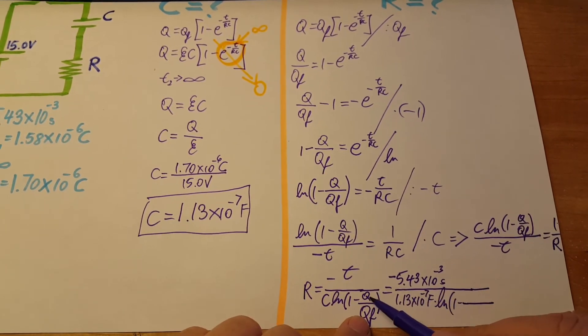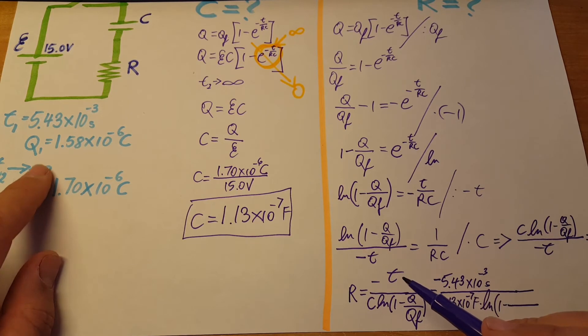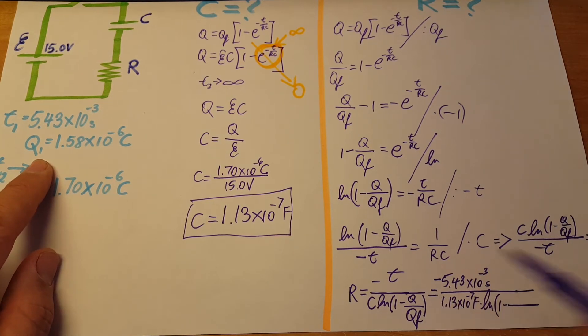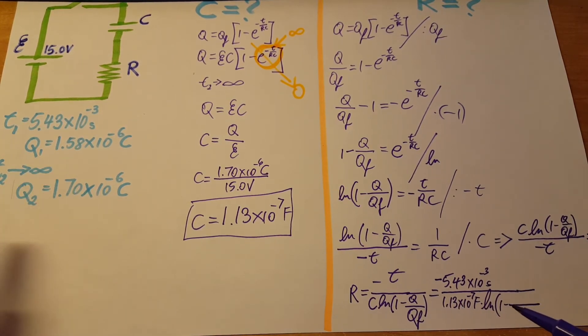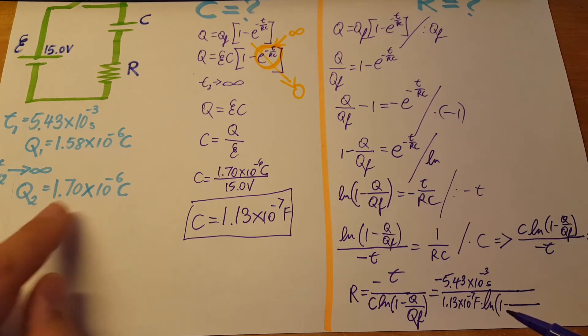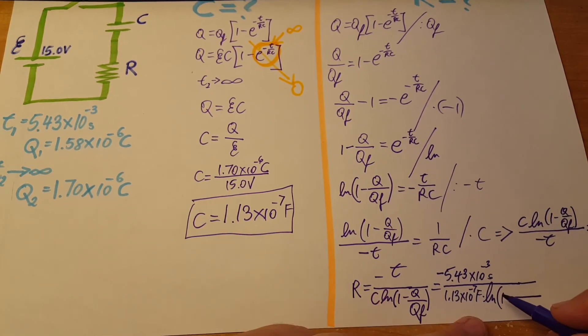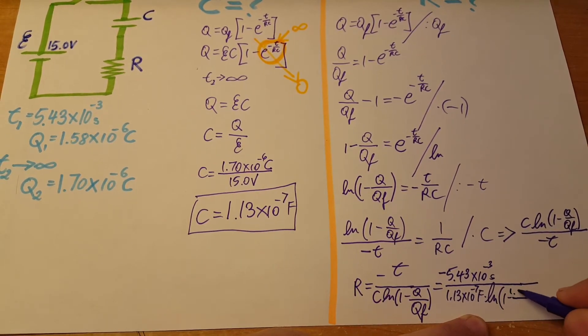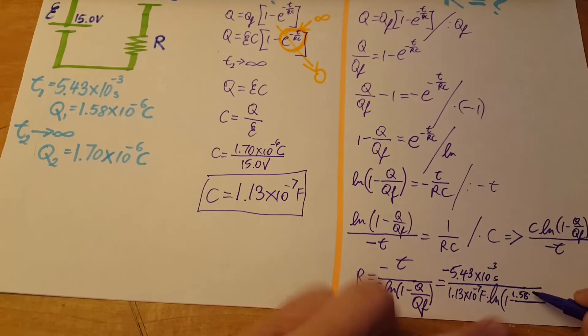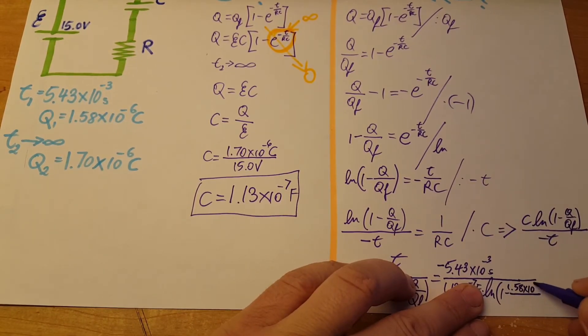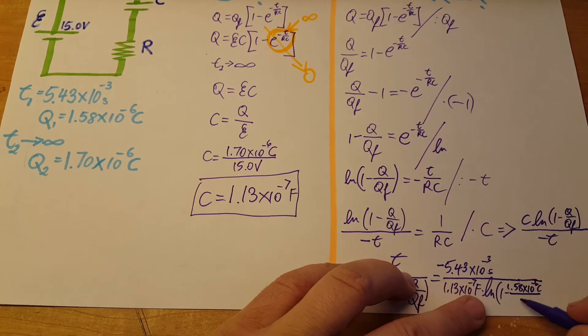Our Q from Q1 we'll divide by our Q from Q2: 1.58 times 10 to the negative 6 coulombs divided by 1.70 times 10 to the negative 6 coulombs.